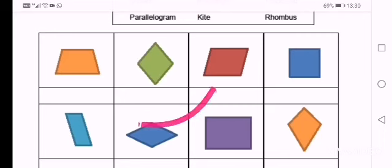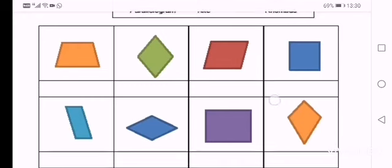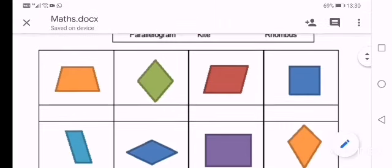The next one, the red shape, is a parallelogram. A parallelogram is made up of two pairs of parallel sides and the opposite sides are equal of length. So you will see the top and the bottom line are the same length and the left and the right line are also the same length.